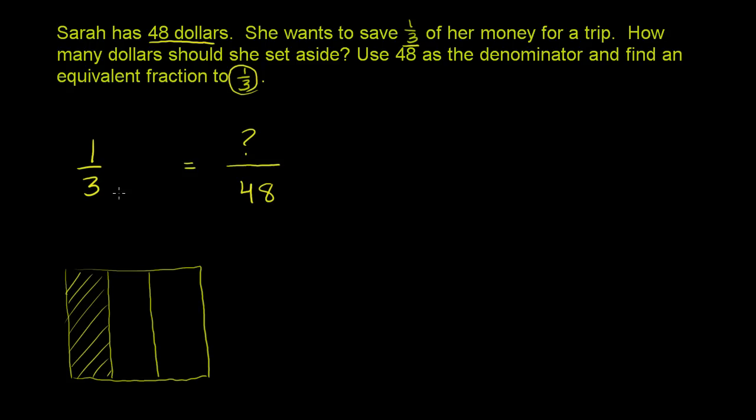Now, if we want to express this as a fraction over 48, how can we do that? Well, we're going to have to split this thing into 48 pieces. So how can we split something into 48? Well, 3 times 16 is 48. So if we split each of these into 16 pieces, it's going to be hard to draw here, but you could imagine.